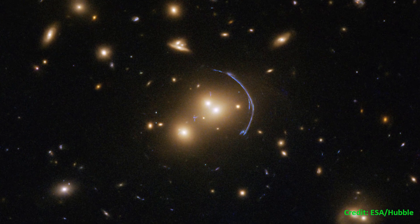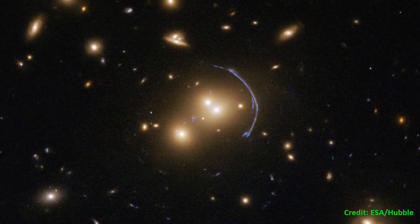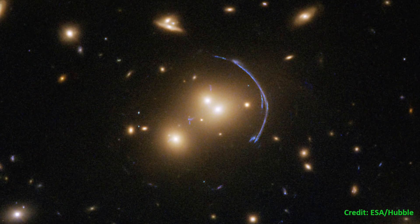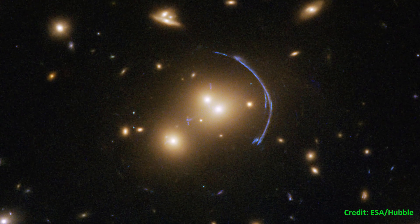Hubble can resolve details within the multiple banana-shaped arcs that are one of the main results of gravitational lensing, as the images of background sources are distorted.